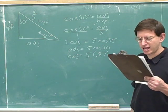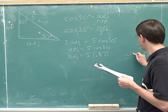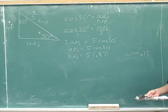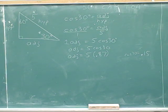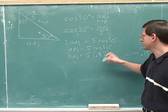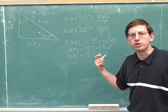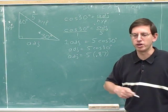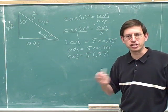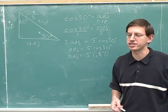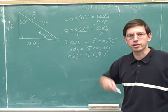What happened if you plugged this in and didn't get 0.87 — what if you got 0.15 instead? If your calculator says that the cosine of 30 is 0.15, that's because you're in the wrong mode. You're in radians mode when you should be in degrees mode. The cosine of 30 degrees should be 0.87. If you have a TI-83 or TI-84, you can change modes by pressing the mode button and switching to degrees. If you have a different calculator, you'll need to figure out how to switch between degrees and radians mode.